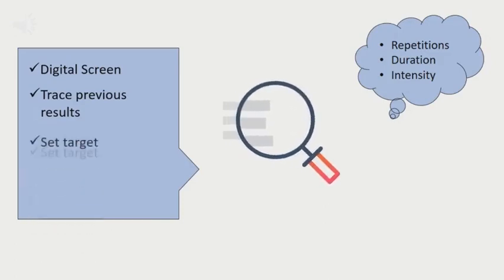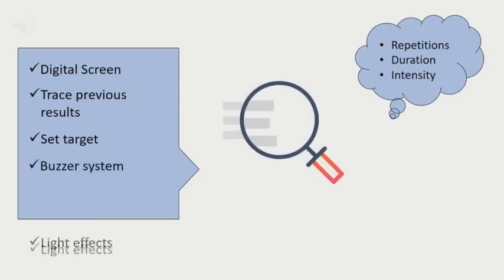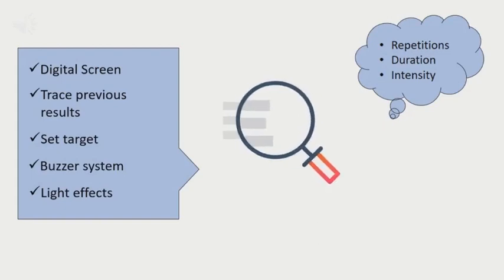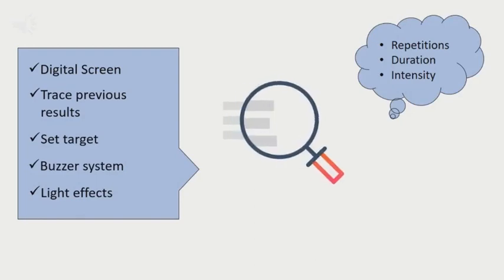It can also be used to set targets in terms of intensity or repetition. This device also comes with a buzzer system and light effects. The buzzer system will be activated when the patient achieves the target set. The patient is able to monitor the reading during treatment, and the light effect will be activated when the patient achieves the target set.